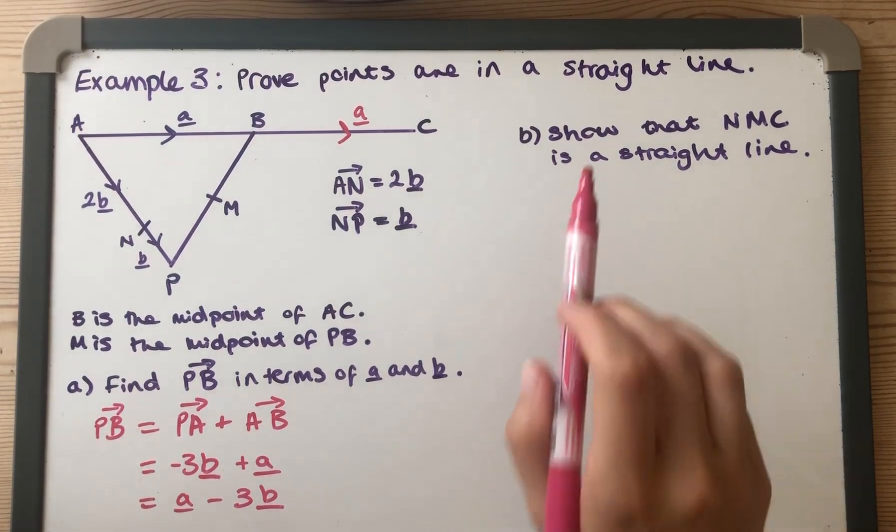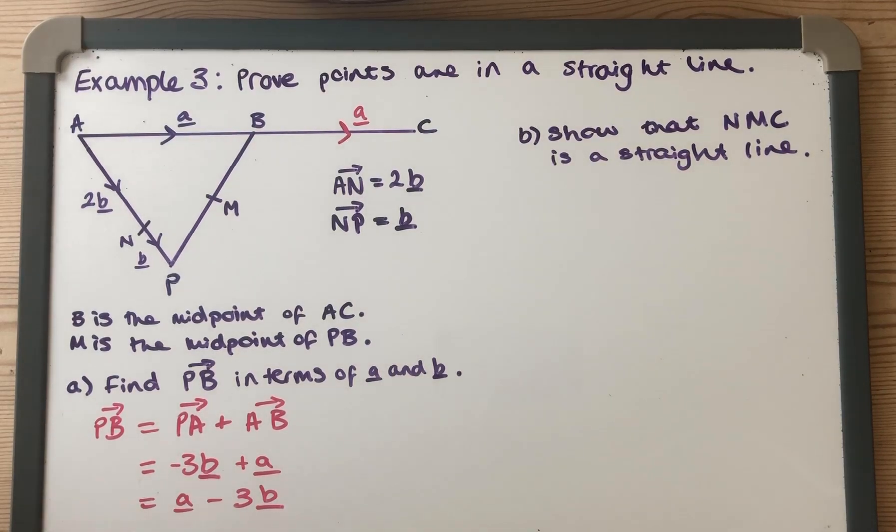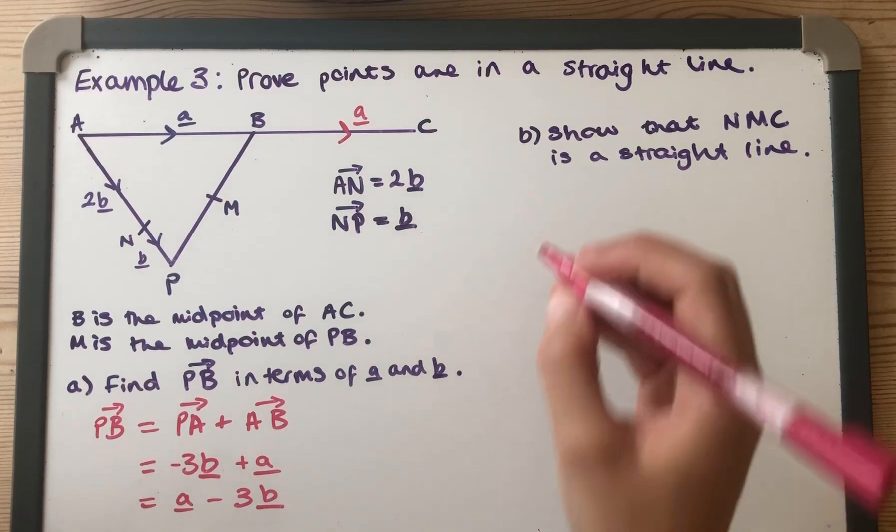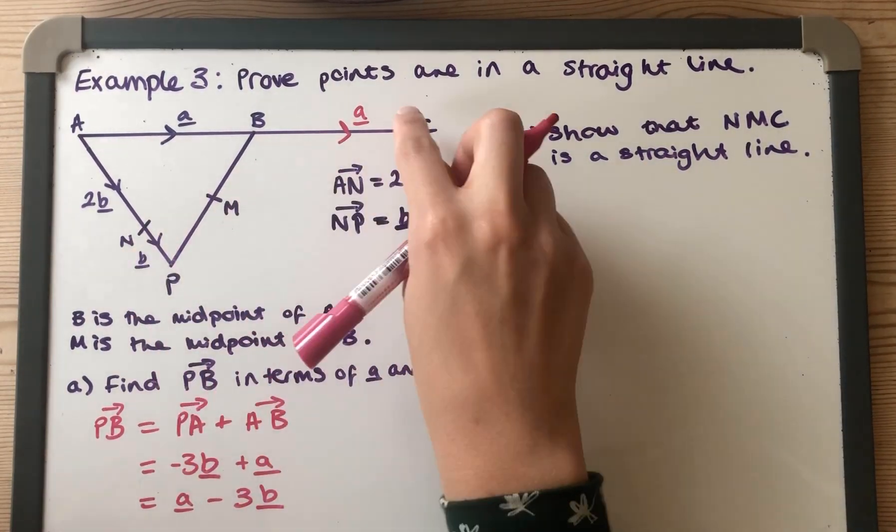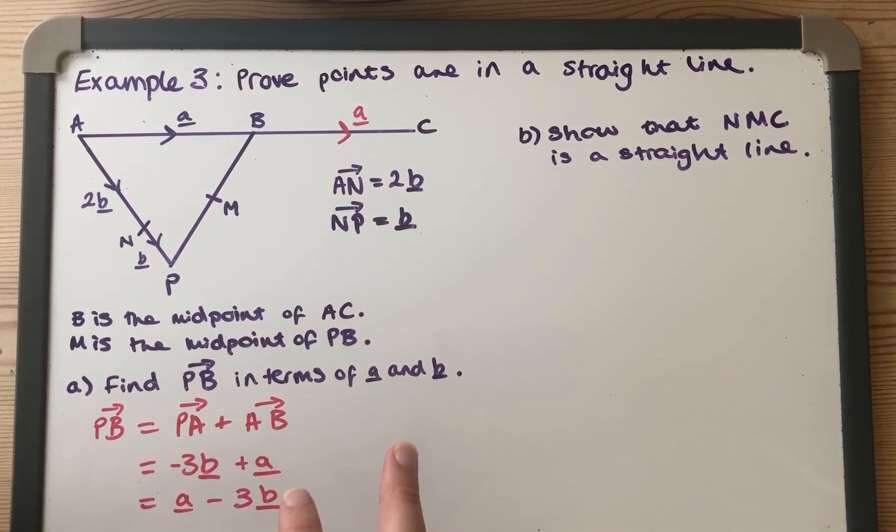Our next part we've got to do is show that N, M, C are on a straight line, and I think this is the easiest way to go about that. Because we want to prove that these are as a straight line, we need to prove that we've got two parallel vectors and we've got a point in common.